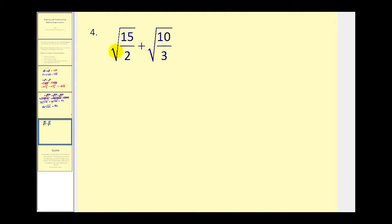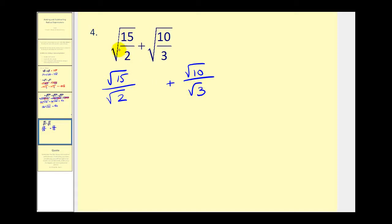The first step is to rewrite this as the square root of 15 divided by the square root of two, plus the square root of 10 divided by the square root of three. We need to eliminate the square root from the denominators — this would simplify perfectly if we had two factors of two, so multiply the numerator and denominator by square root two. Over here, if we had two factors of three, this would simplify perfectly, so multiply by the square root of three on the top and the bottom.